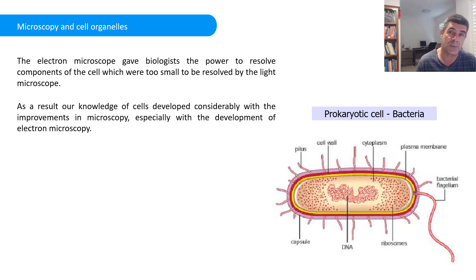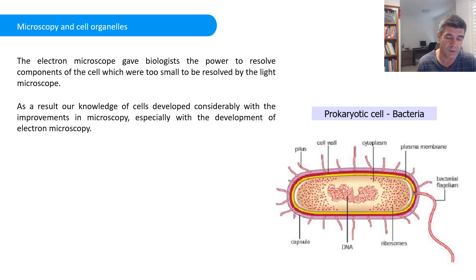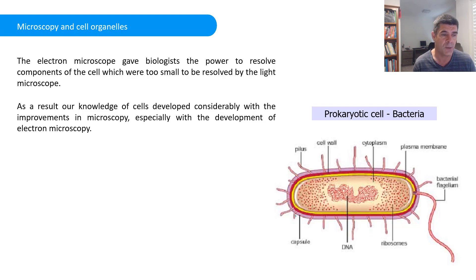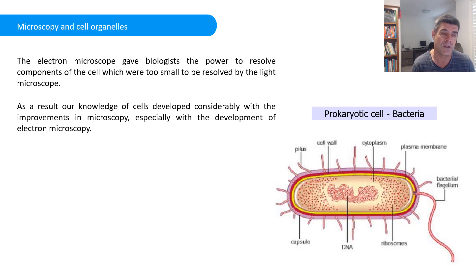As developments in microscopy grew, our understanding of cells changed, and we were able to start compiling a list of key components in each of these different types of cells. I've structured this video so it will be a little longer, meaning you can stop it at different stages, add to your table, and also add to it from any of the slides or experiences you're having in class. Build up a nice picture of the different organelles present in each of the different groups.